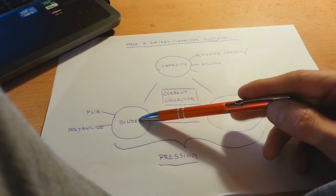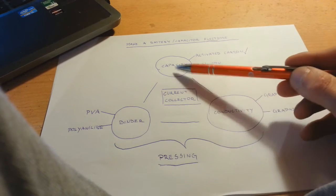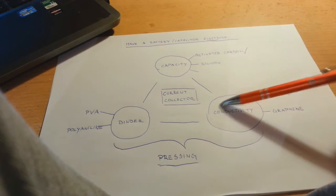So all these three main components such as the binder, material for the capacity, and material for conductivity.